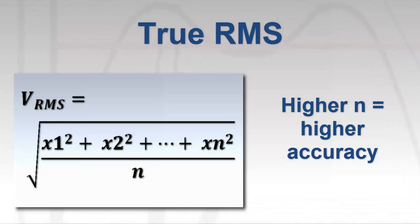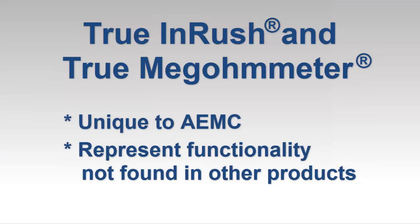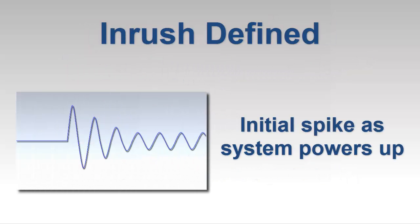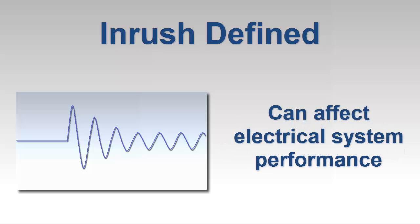Always look for True RMS when selecting a meter. Less well known are the terms True Inrush and True Megometer, which are unique to AEMC and represent advanced capabilities. When an electrical system or device is turned on, voltage and current initially spike before settling down to a steady state operation. This phenomenon is known as startup inrush, and it can be an important consideration when monitoring your electrical network for events that could affect the performance of your facility.